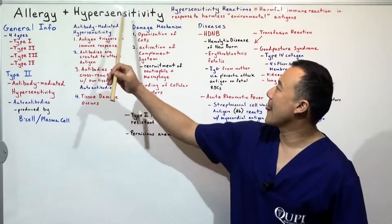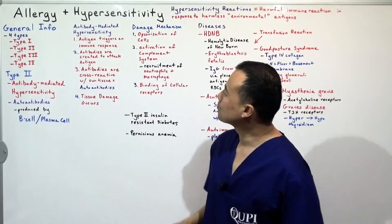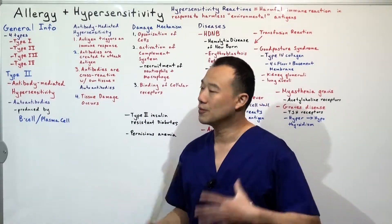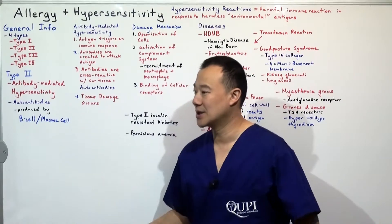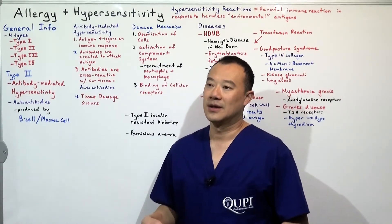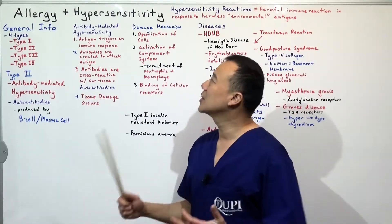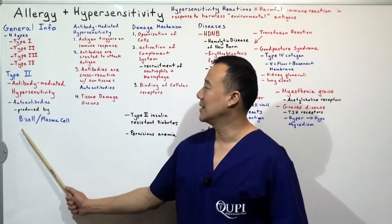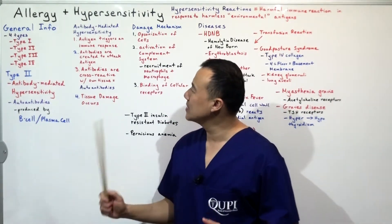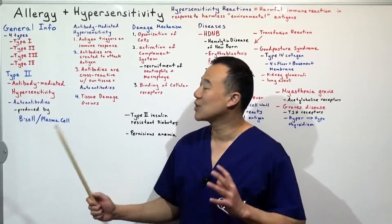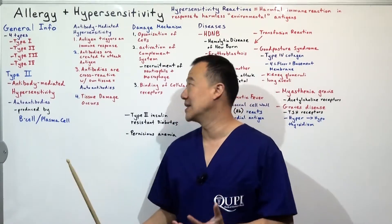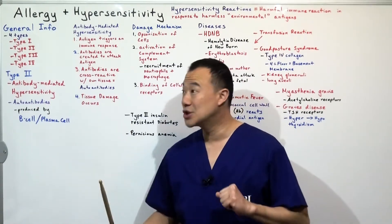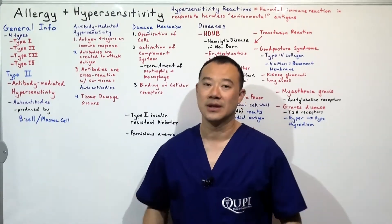Here's how this happens: antigens — which can be drugs, some drug allergies, or a different type of blood in a blood transfusion — trigger an immune response, causing antibodies to be created. These antibodies are cross-reactive with your own tissue, hence they're called auto-antibodies, and because they're cross-reactive they bind to the Fc receptors of your tissues, causing tissue damage and allergies.